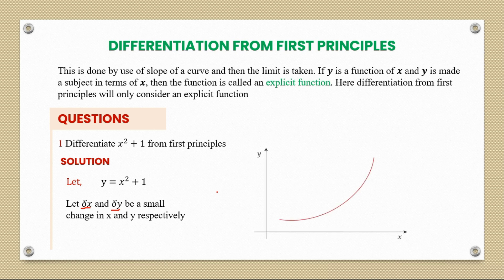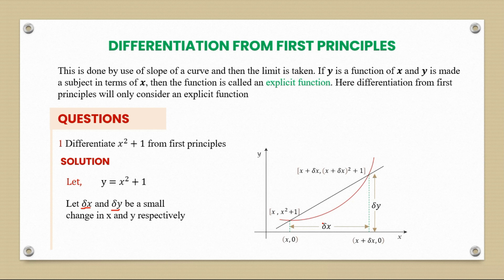We can illustrate this with a diagram of our curve. To find the slope, we first identify where the tangent passes. We have a point at x, and then moving to another point introduces a change in x and a corresponding change in y. So x changes from x to x plus Δx, and y changes from x squared plus 1 to (x plus Δx) squared plus 1.